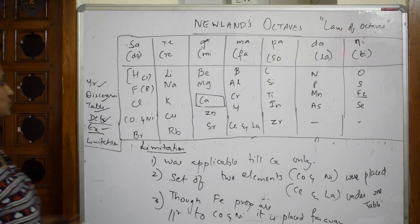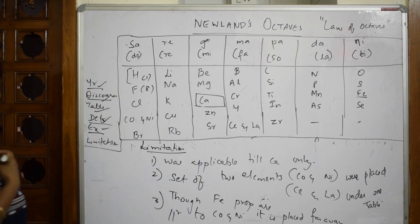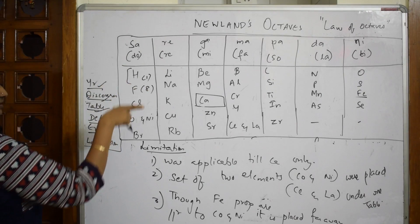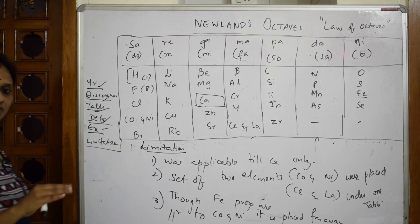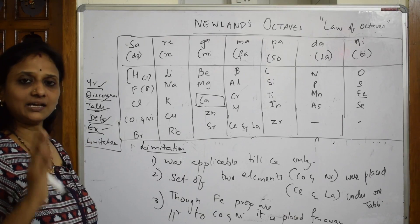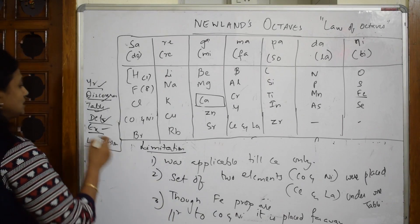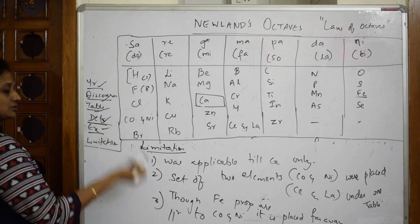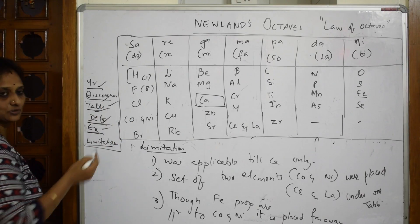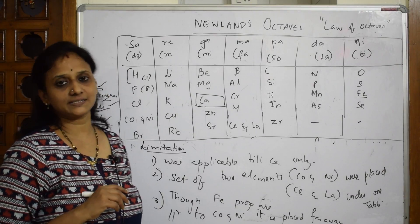So to summarize: I've written the year, the discoverer, the table name — Law of Octaves — and why it's called octaves because in musical instruments the first and eighth note sound similar. I've given the definition, the example, and the limitations. This is how you write it in the exam.